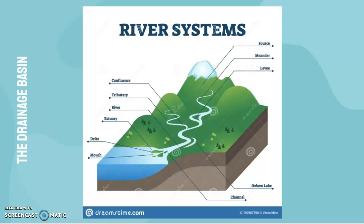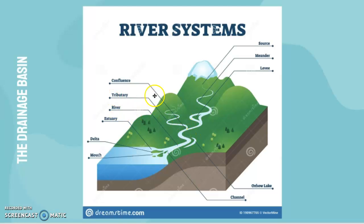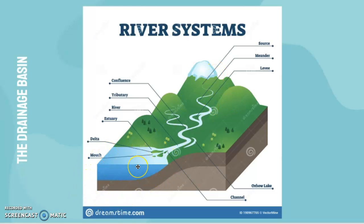Let's look at a diagram of a drainage basin. Features to be aware of include the source, where the river starts; confluences, where two rivers meet; a tributary, a smaller river flowing into a larger one; the main channel; estuaries, which are streams within the delta at the mouth; the delta of deposited sediment; the mouth, where the river ends; and the watershed, the area separating two drainage basins.